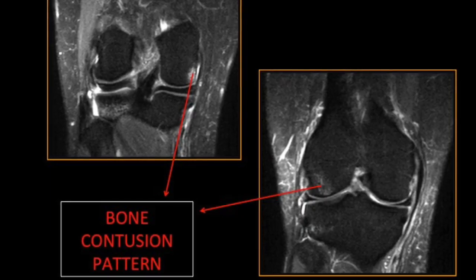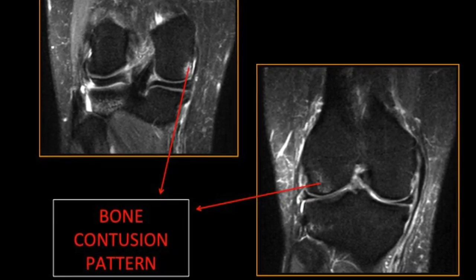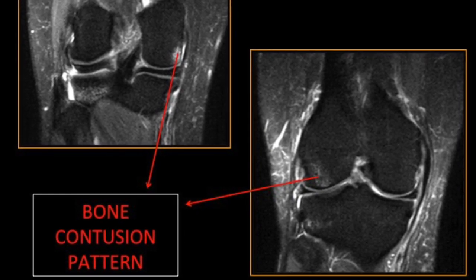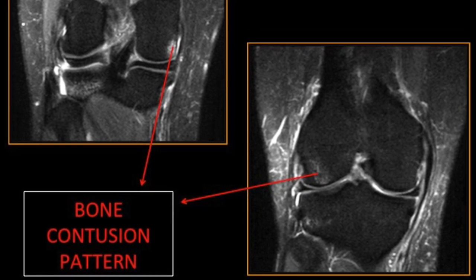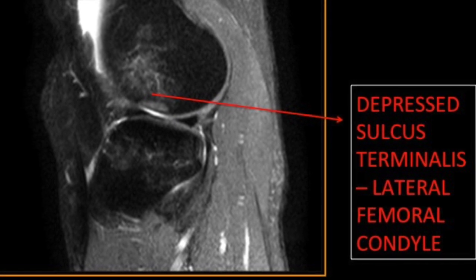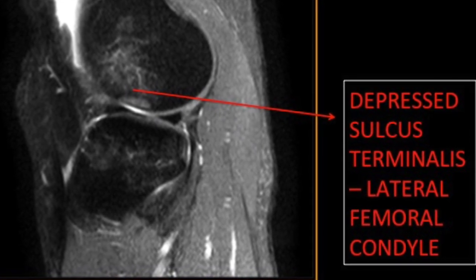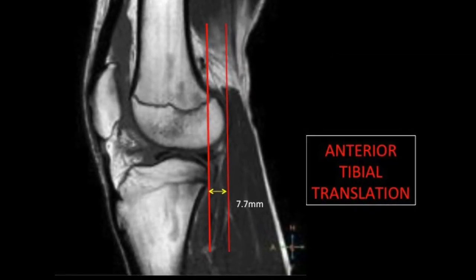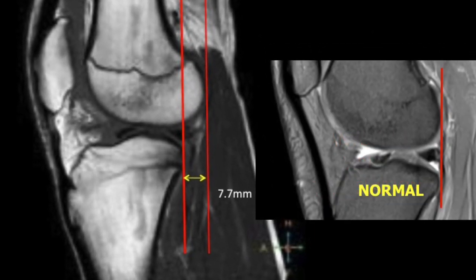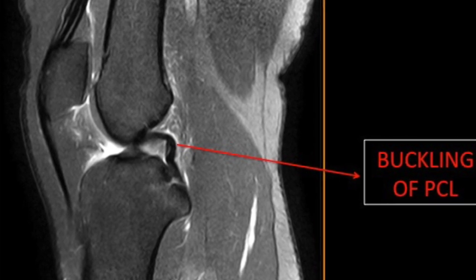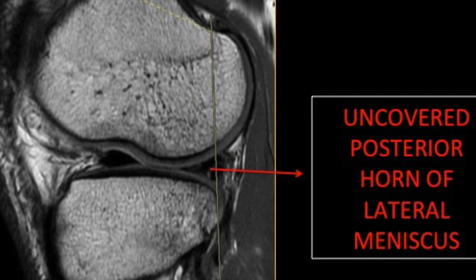The secondary signs of ACL tear include bone contusions. Depending on the mechanism of injury, the contusion pattern will differ — either lateral compartment osseous contusions affecting the posterolateral tibial plateau, which is most specific, or posterior medial tibial plateau and lateral femoral condyle contusion. Lateral femoral condyle contusions are associated with depression of the lateral sulcus terminalis, as seen here. Other secondary signs are anterior tibial translation of more than seven millimeters, buckled PCL due to abnormal angulation from a lax ACL, and uncovered posterior horn of the lateral meniscus.